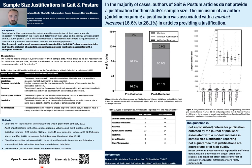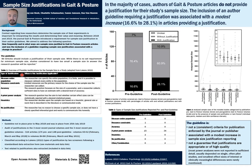You can see the details of the number of articles and specific volumes we investigated in the methods. Using Daniel Atkins' article on sample size justification, we used these different types of justification in order to classify what we found in the Gait and Posture articles.